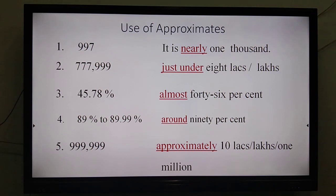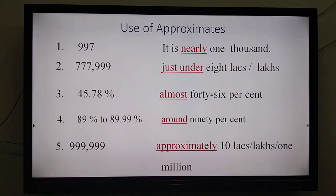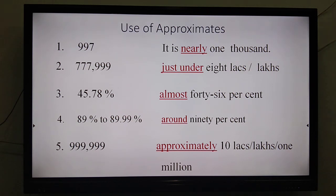In the same way, if we have 7,77,999, writing it in this form would be really very tedious and very long. So we can just express it by saying that this figure is 'just under 8 lakhs.' We approximate to the next number — we go to the higher or lower nearest one. For 45.78%, we can say 'almost 46%.'